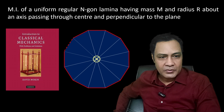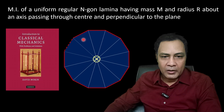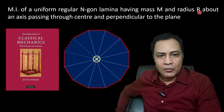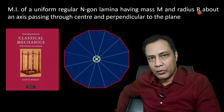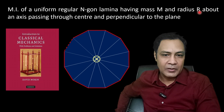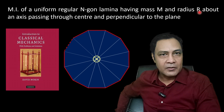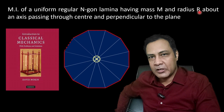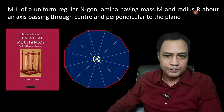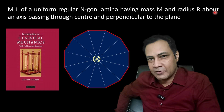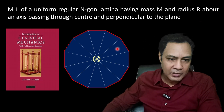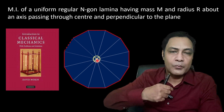The question is: there is a uniform regular n-gon lamina having mass m and radius r. A regular n-gon is simply a regular polygon having n sides, each side having the same length. It has mass m and radius r, and that regular n-gon can be circumscribed in a circle of radius r. We have to find the moment of inertia about an axis that passes through its center and perpendicular to the plane.